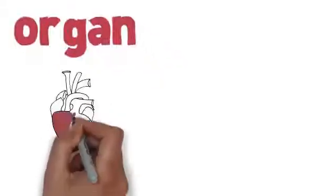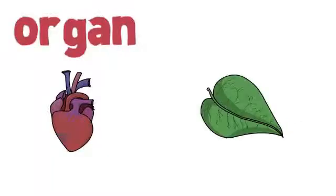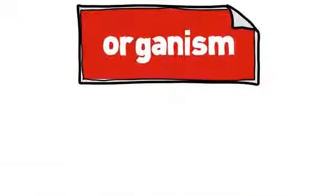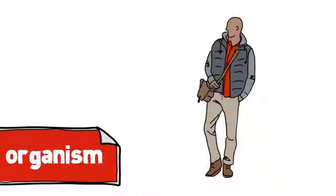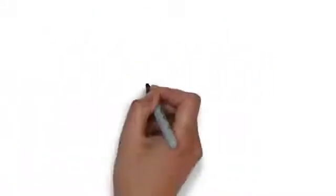An organ is a group of different tissues put together to do one job. For example a human heart or a leaf on a plant. An organism is the whole thing together. Examples of this include a human being made up of eye cells, hair cells, skin cells, organs such as the heart, kidneys and lungs. Together this forms the organism of a human being.